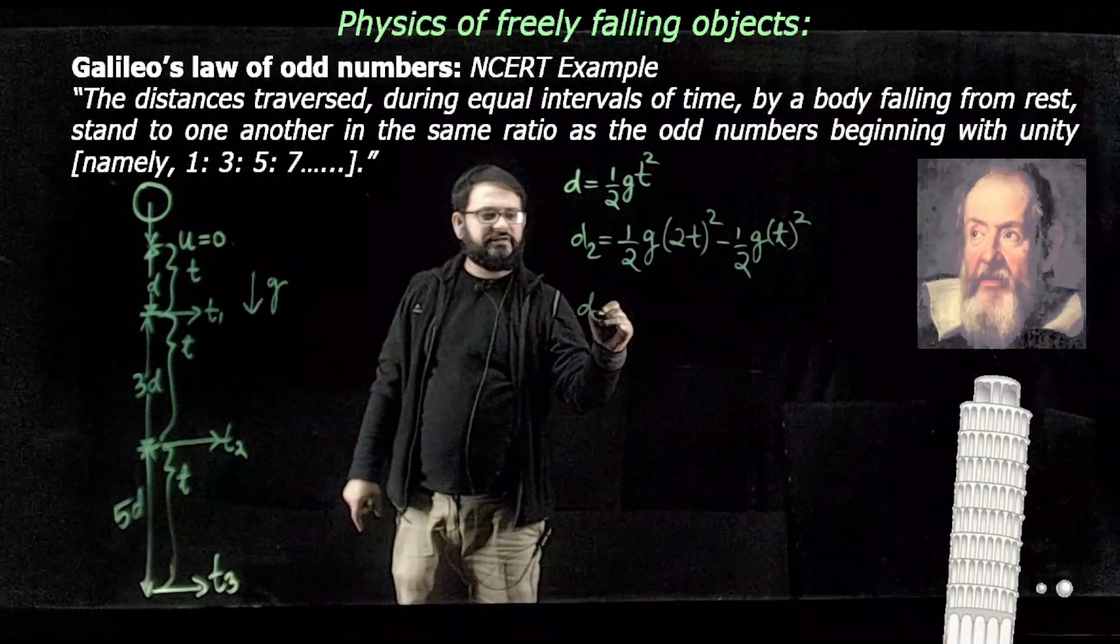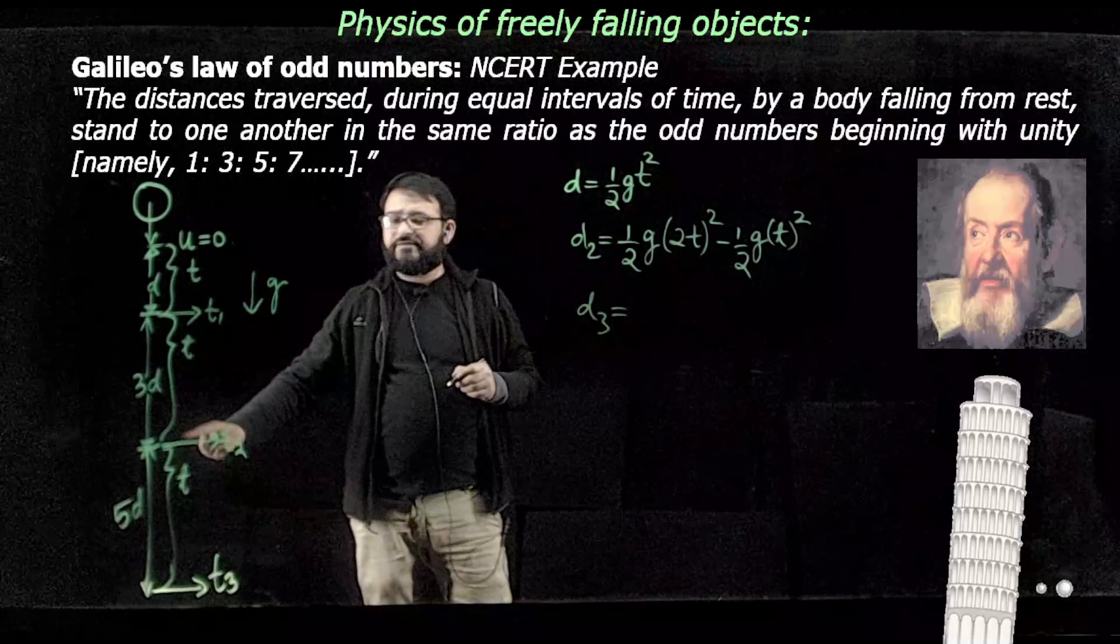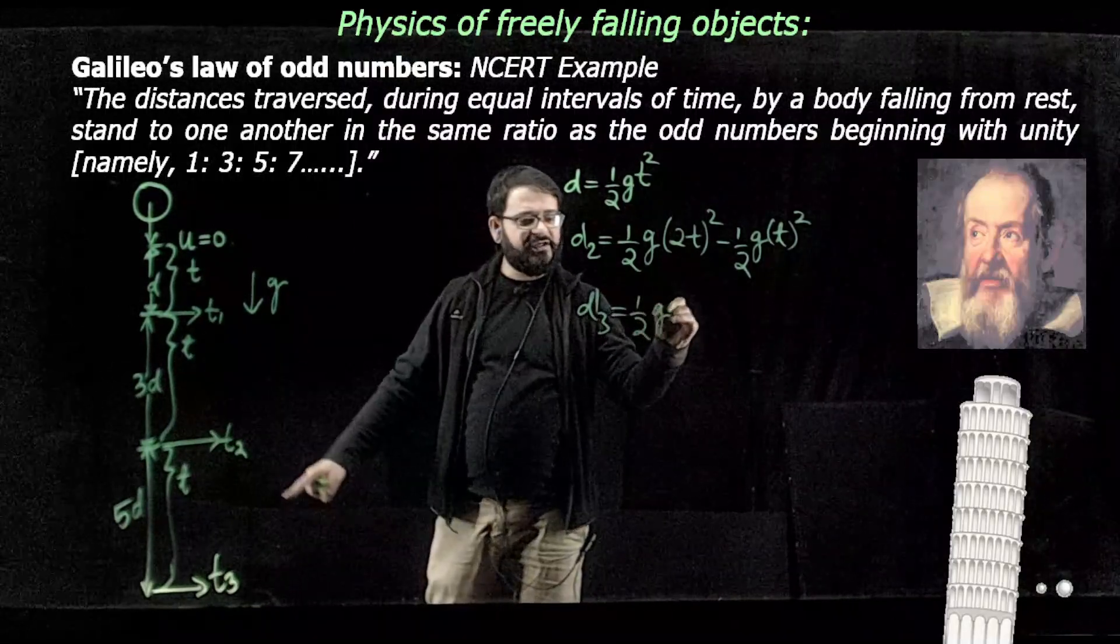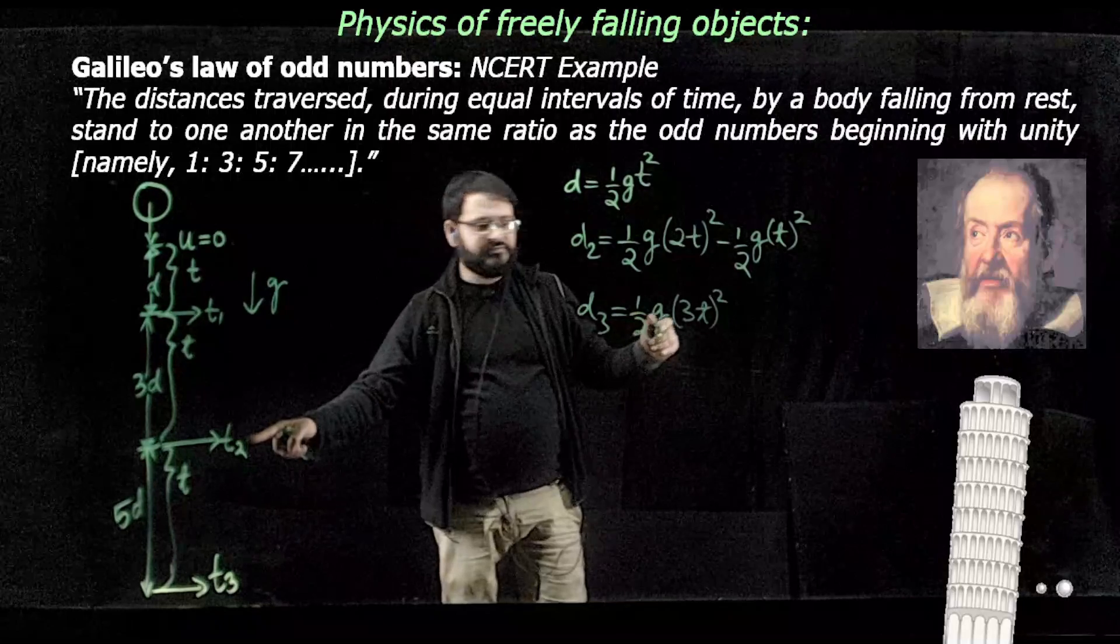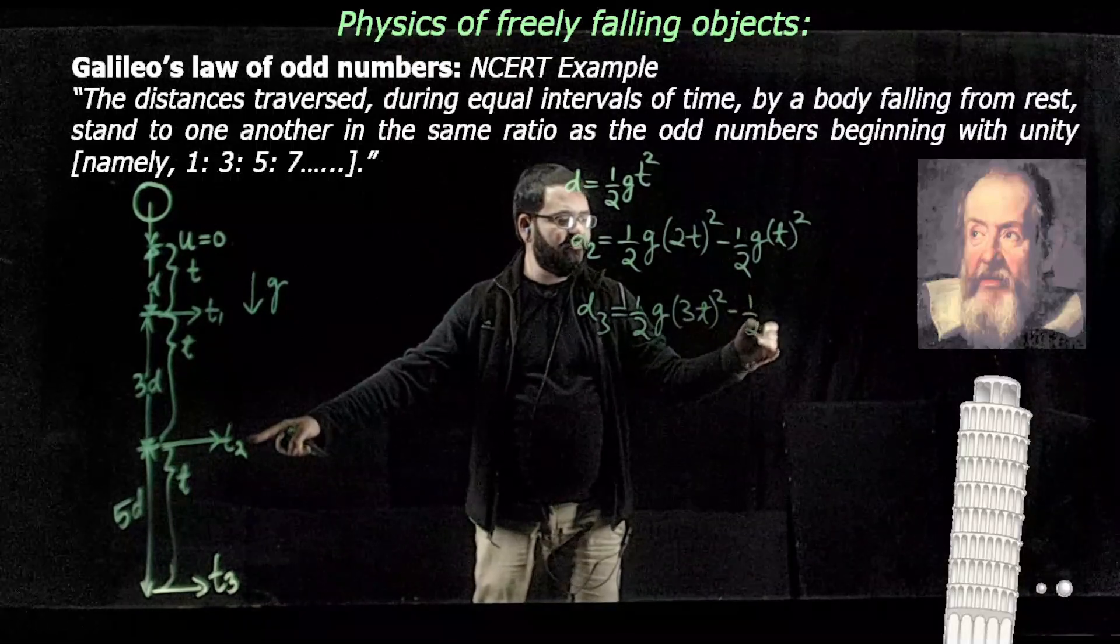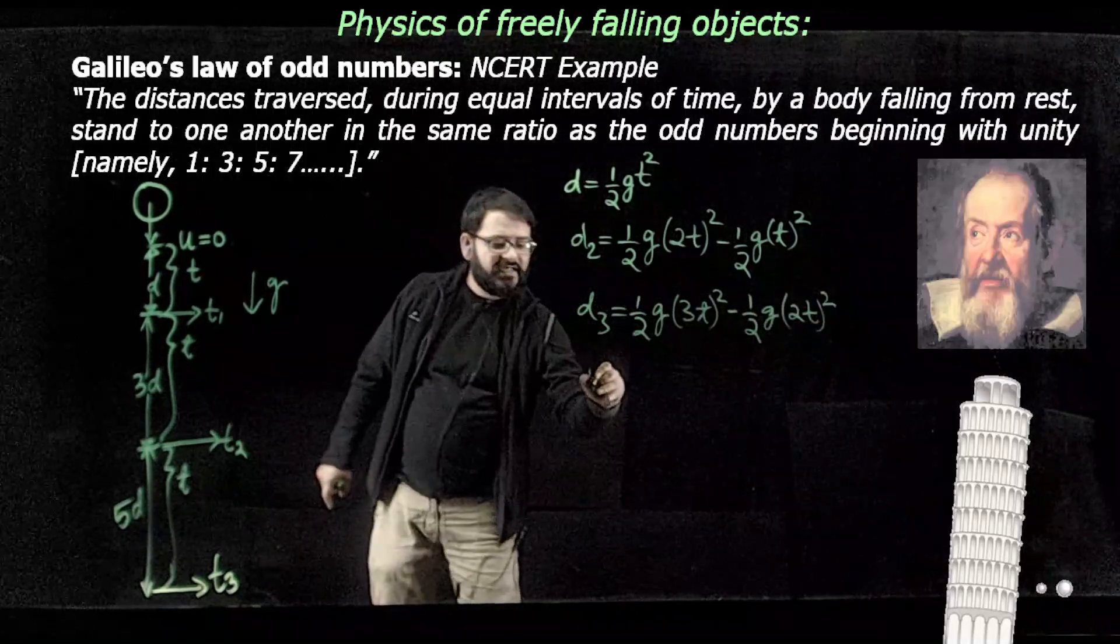Moving on to the distance traversed during the third interval: the total distance after 3T is half g times 3T squared minus the previous distances, which gives us 5 times half g T squared.